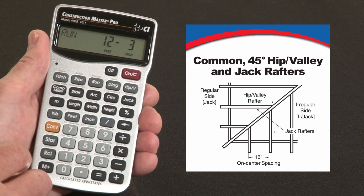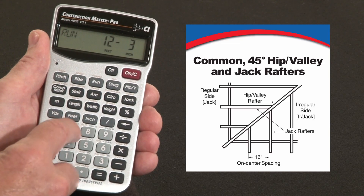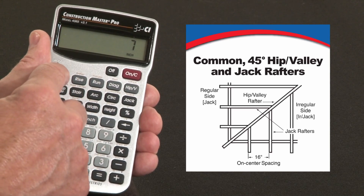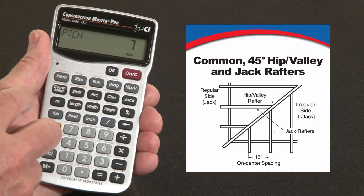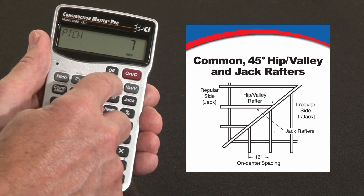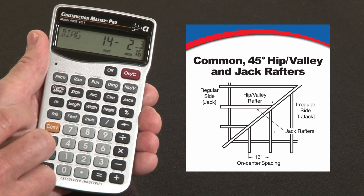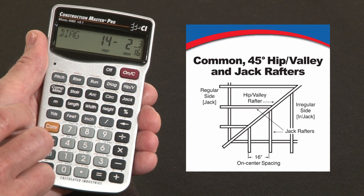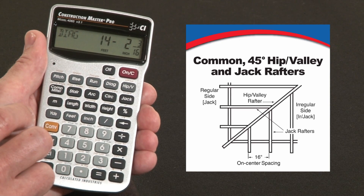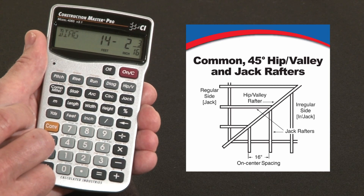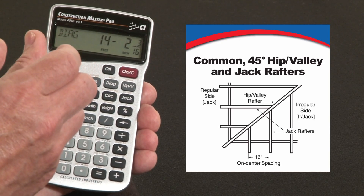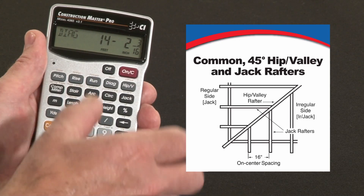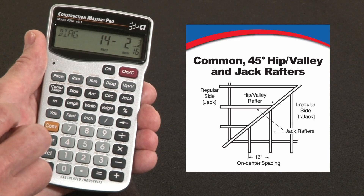This is a 7/12 pitch roof, so I'm going to enter 7 inches of pitch. And now it's all set. I hit the diagonal key. The point-to-point diagonal is going to be 14 foot 2 and 3/16ths — that's from the center of the ridge to the outside edge of the plate. You would need to make an adjustment for half the thickness of the ridge and add any overhang for the rafter tails for the exact cut length.